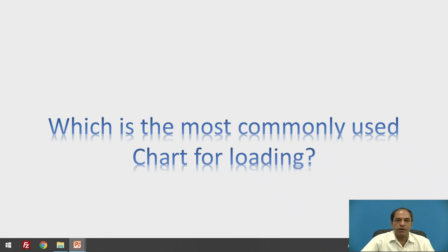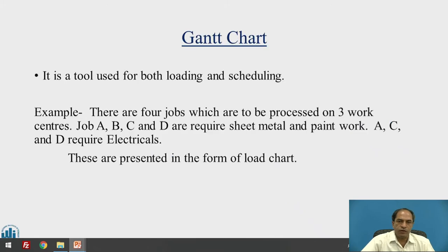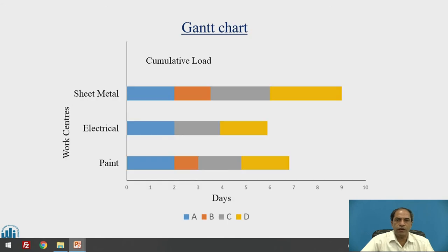Loading can be done in a variety of ways and with the help of different charts. The most commonly used chart for loading is the Gantt chart — it is a tool used for both loading and scheduling. For example, there are four jobs to be processed on three work centers: jobs A, B, C, and D requiring operations such as sheet metal, painting, and electricals. These are presented in a simple form called a load chart or Gantt chart.